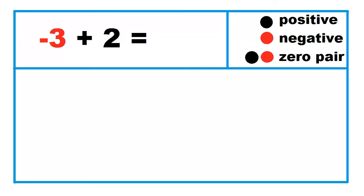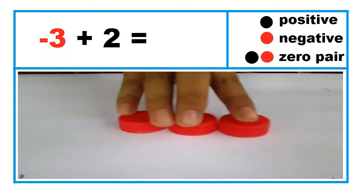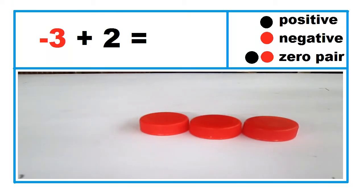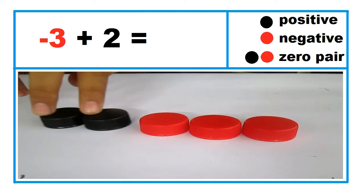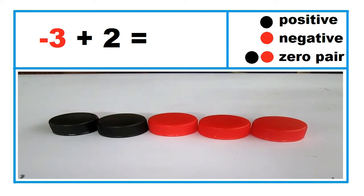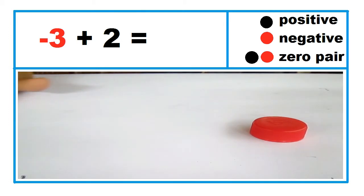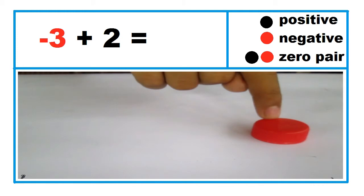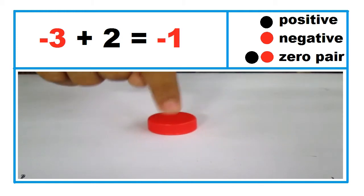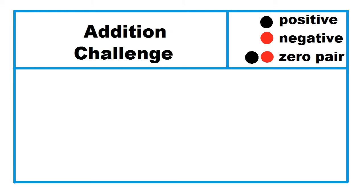Another example: negative 3 plus 2. Three red caps plus 2 black caps — take away 2 zero pairs. Negative 3 plus 2 equals negative 1.